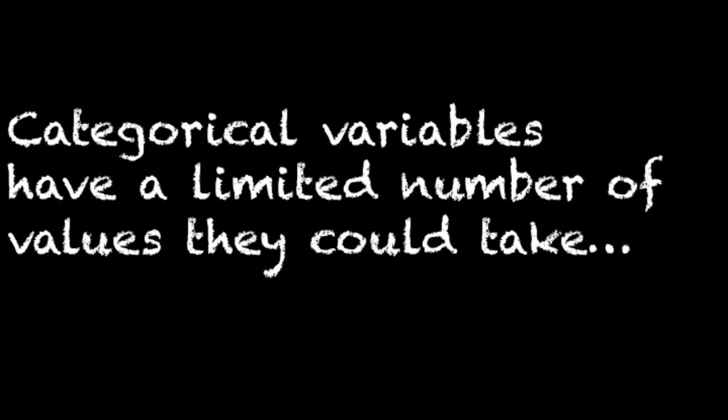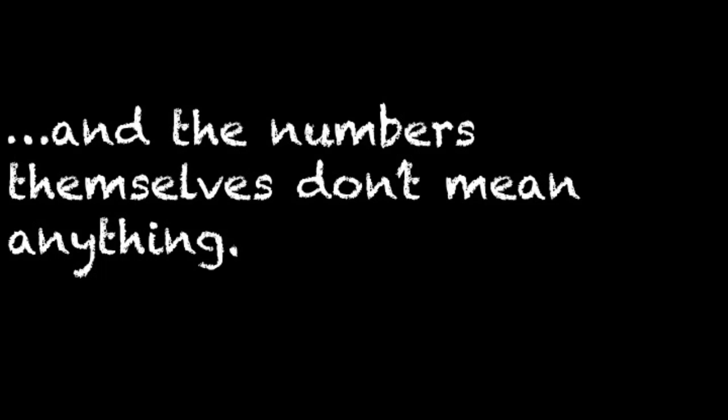There are several different scales, some easier to tell apart than others. The big distinction is between categorical and continuous variables. If there are a limited number of categories that a person could choose, that's categorical. For instance, gender and city in which you live are categorical variables. If we assigned numbers to those variables, the numbers wouldn't do any work for us except as an identifier.